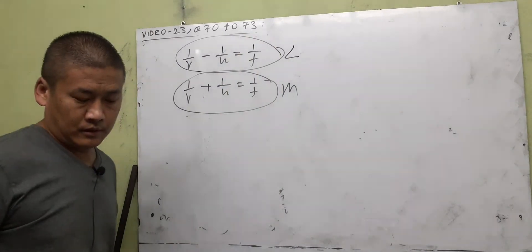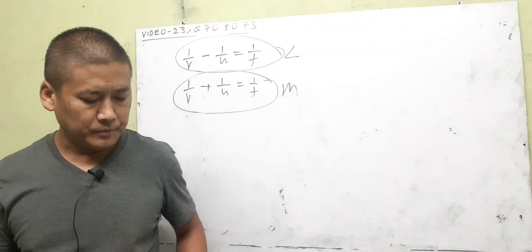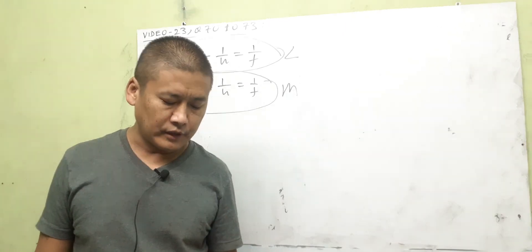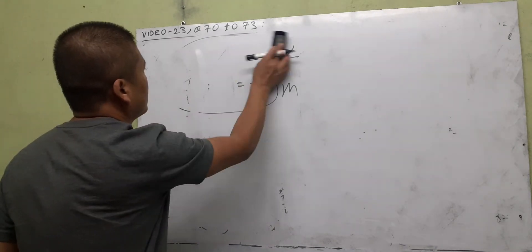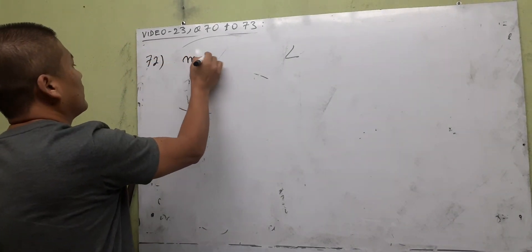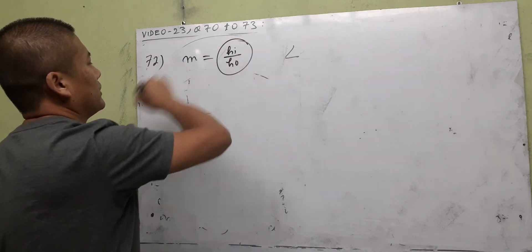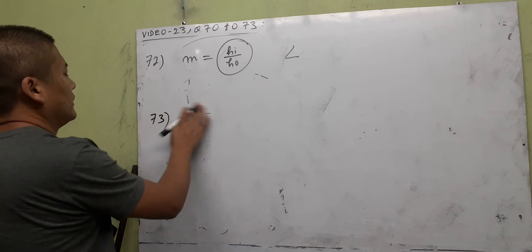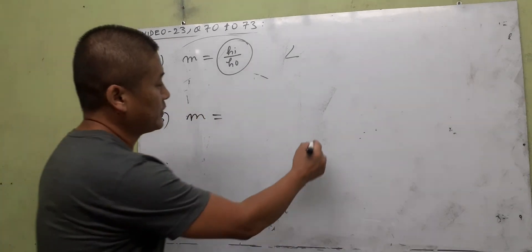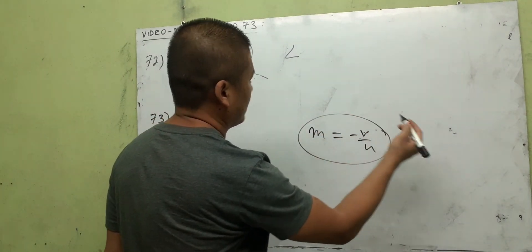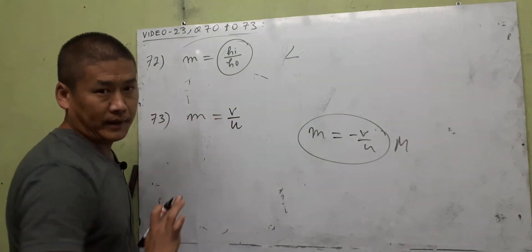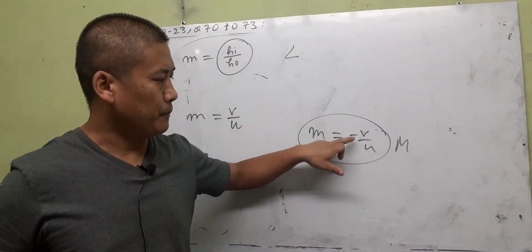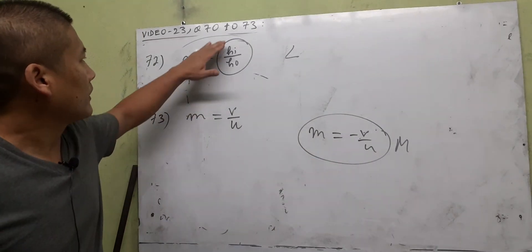Question 72: Define magnification for spherical lenses. The ratio of the height of the image to the height of the object for a spherical lens is called magnification, or linear magnification. So m = height of image / height of object. Question 73: Magnification in terms of v and u. For mirrors it is m = −v/u, but for lenses the equivalent formula is m = v/u with no minus sign — image distance divided by object distance without the negative sign. That's the main difference.